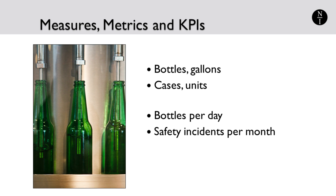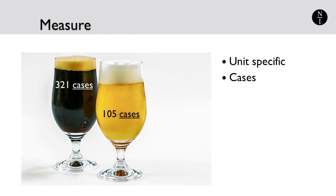I'll explain this in more detail in a moment. But first, let's start with the most basic of the terms explained in this video, which is the word measure. A measure is a unit-specific term — a definition that can be hard to understand, so I'll give you a few examples. Suppose you are a company that produces and sells two kinds of beer: light beer and dark beer. You walk into your warehouse and note that you have 105 cases of light beer and 321 cases of dark beer sitting on the shelves. 105 and 321 are measures of your product inventory, and the unit of measure is cases.